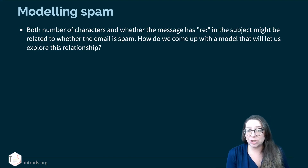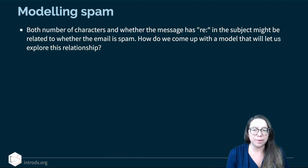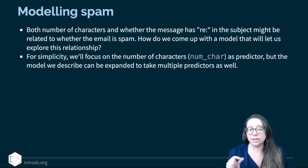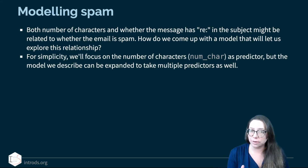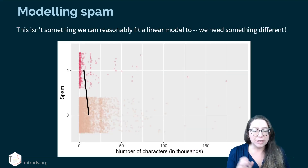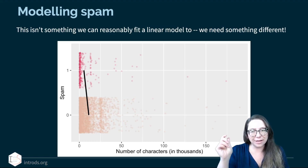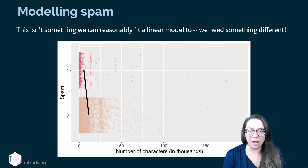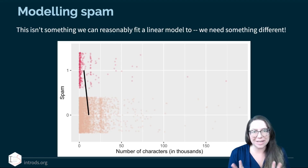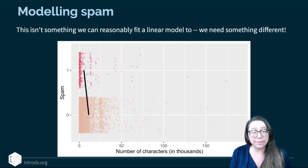So how do we model spam? Both number of characters and whether the message has 're' in the subject might be related to whether the email is spam, but how do we actually come up with a model? For simplicity we're going to focus on the number of characters as a predictor, though the model can be expanded to multiple predictors. Here is a jitter plot of the emails and their character counts. I tried to fit a linear model by connecting the means of the two groups, but that doesn't look right — we're going to need something different.